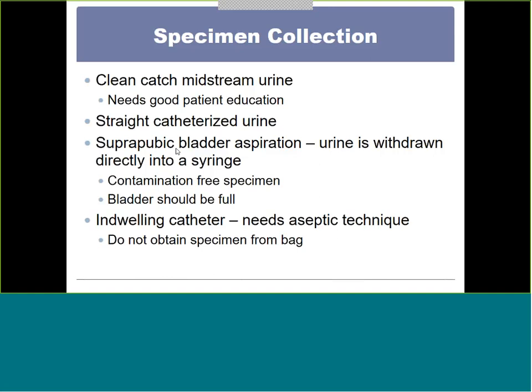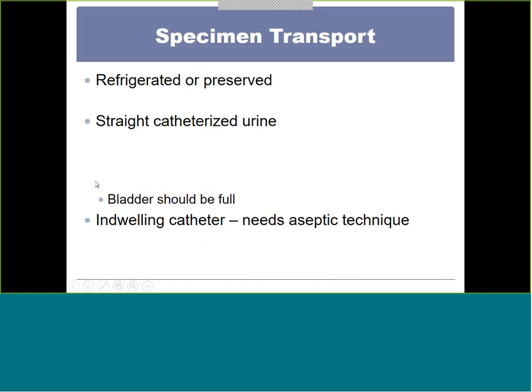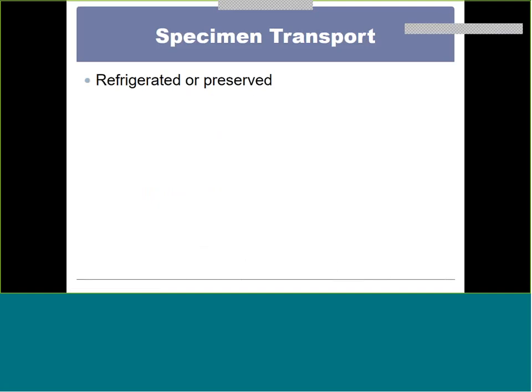With in-dwelling catheters, make sure to use aseptic technique. Importantly, we never take urine out of the collection bag — it's been sitting there growing bacteria. When we get a urine sample, we ideally process it right away, because the longer it sits on a countertop the more bacteria multiply. Unless it has a preservative, we refrigerate it until we can work it up.